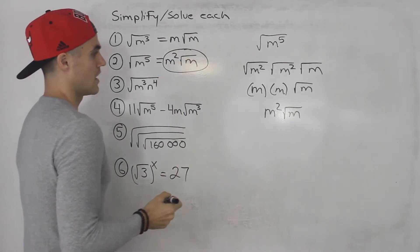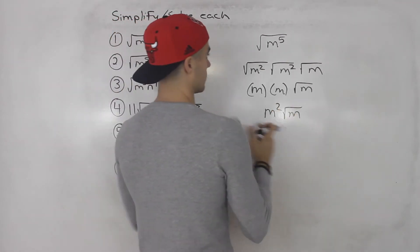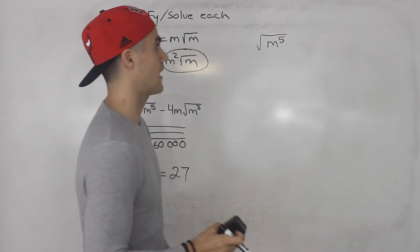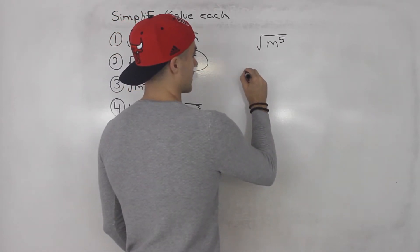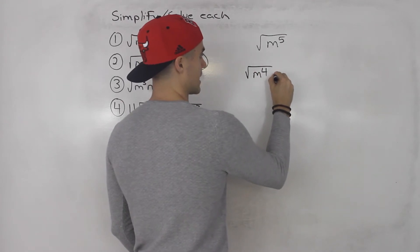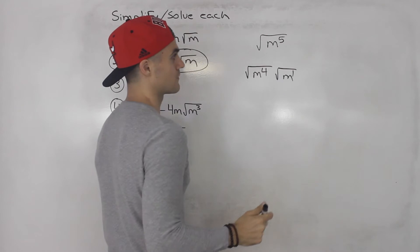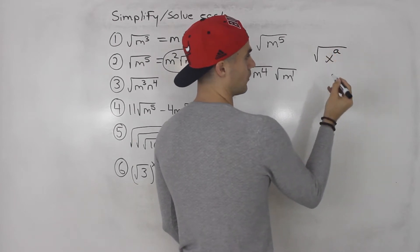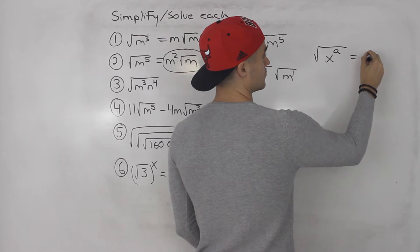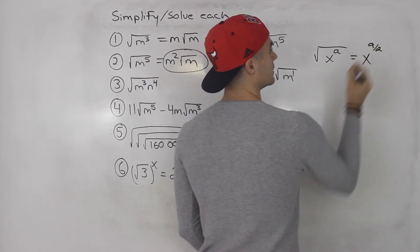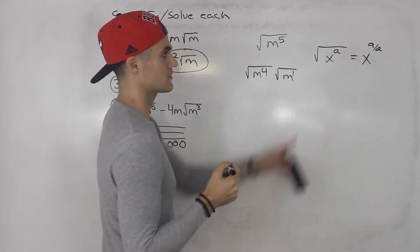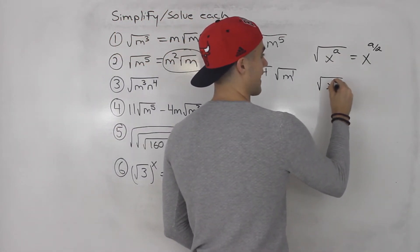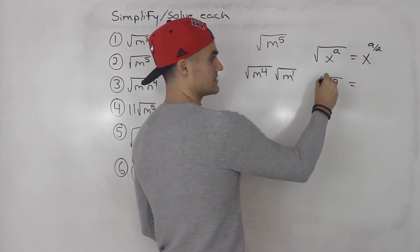Another way to do this — because if this were like root m to the 21st, you're not going to write out m squared ten times — is to take the square root of m to the 4th times the square root of m, since 4 plus 1 gives us 5. The square root of a variable to an exponent equals that variable with the exponent divided by 2. This works well when the exponent is even. For example, the square root of x to the 8th: 8 divided by 2 is 4, so this equals x to the 4th.